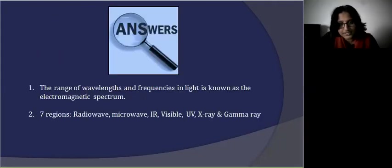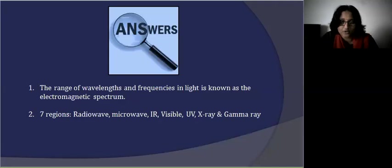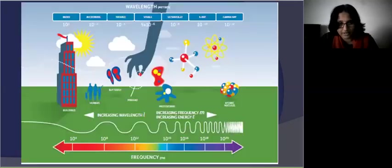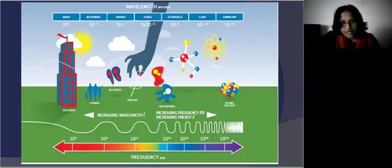The answer is: the range of wavelengths and frequencies present in light is known as the electromagnetic spectrum, and there are seven regions in the electromagnetic spectrum. They are radio wave, microwave, IR, visible, UV, X-ray, and gamma.